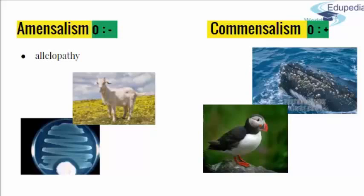On the other side, commensalism is when one side has nothing to gain or lose from the relationship, but the other side gains — one is neutral, the other is in a plus. A nice example is puffins: when they move to islands for nesting, they use abandoned rabbit holes. The rabbits are not at any loss; the puffins benefit. The other picture shows whales and barnacles: barnacles attach to whales and travel to new, nutrient-rich grounds. The whale feels no harm or benefit from that relationship.